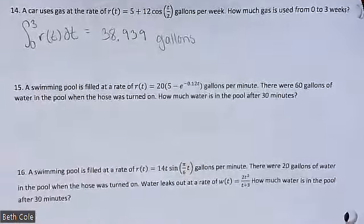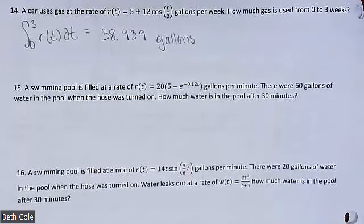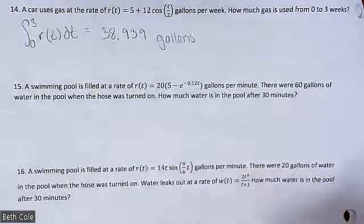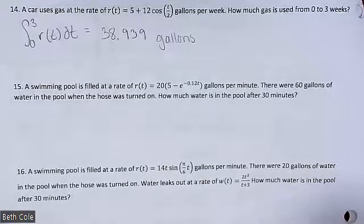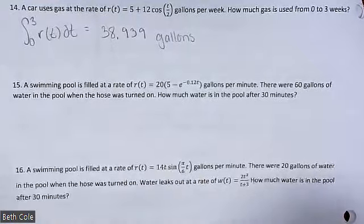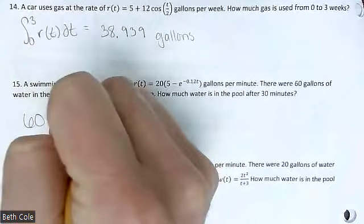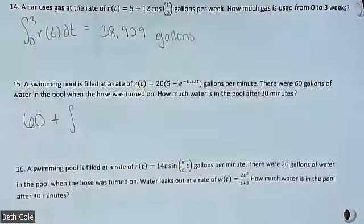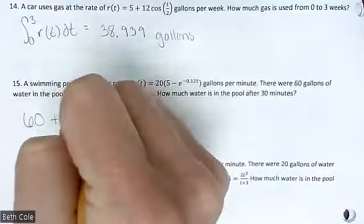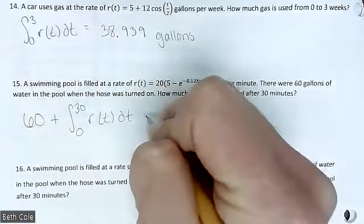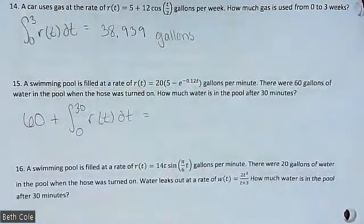A swimming pool gets filled up at a rate of [given function] gallons per minute. This one has an initial condition: there were 60 gallons in the pool when it got turned on. How much water is there after 30 minutes? We set it up as 60 plus the integral from 0 to 30 of r(t) dt.